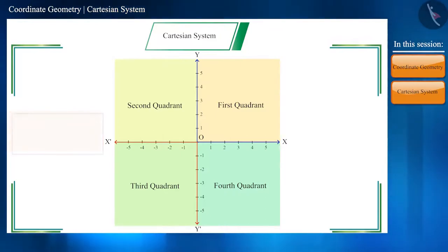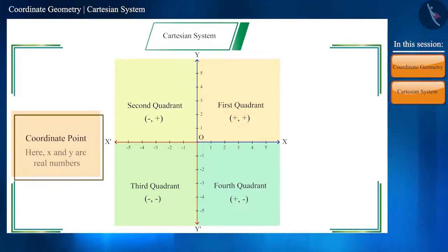The points in these planes are represented in this manner, which is called the coordinate point. The first number in this coordinate point represents the point on the x-axis and the second number represents the point on the y-axis.